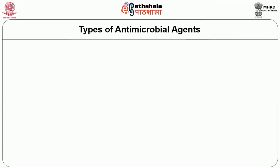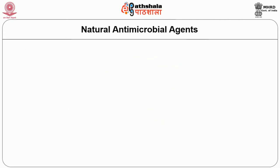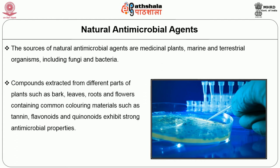Antimicrobial agents used in the textile industry are of two types: natural and synthetic. The sources of natural antimicrobial agents are medicinal plants, marine and terrestrial organisms including fungi and bacteria. Compounds extracted from different parts of plants such as bark, leaves, roots and flowers containing common colouring materials such as tannin, flavonoids and quinonoids exhibit strong antimicrobial properties. These antimicrobials are eco-friendly and non-toxic.